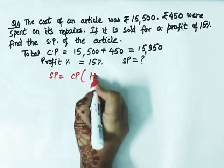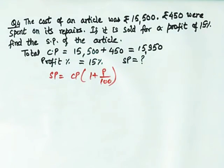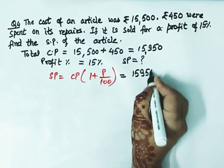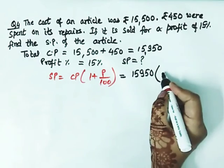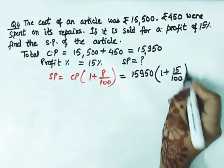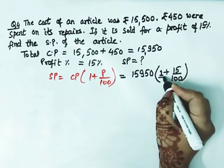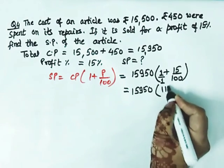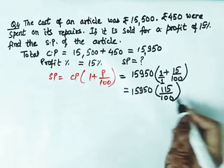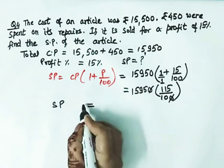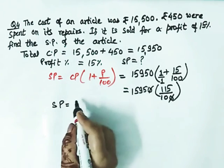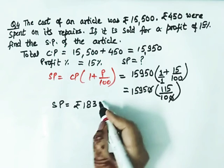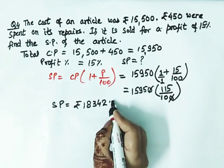When you have profit percent, substitute the values. CP is 15,950. In place of profit percent, we put 15 upon 100. You can cross cut, or take 1 with denominator 1, take LCM of 100, then 100 plus 15 equals 115 by 100. Now solve this and we can find the sale price.